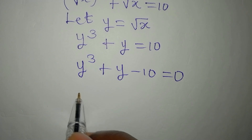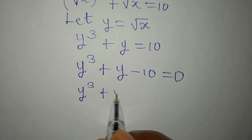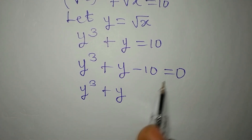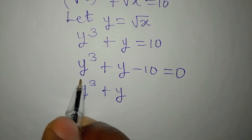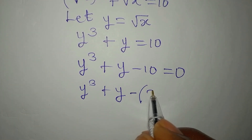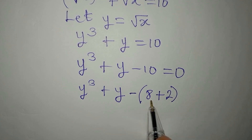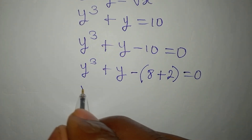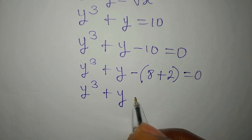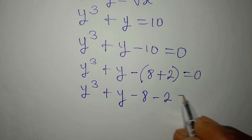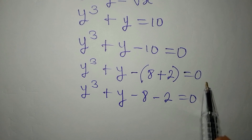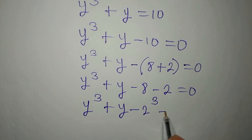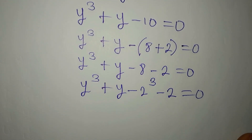We want to factorize y cubed plus y minus 10. We ask: is there a number in 10 that can be written as a perfect cube? Yes — 8, since 2 cubed is 8, and 8 plus 2 equals 10. So we split: y cubed plus y minus 8 minus 2 equals 0, and opening the negative gives us y cubed minus 2 cubed, then plus y minus 2, equals 0.